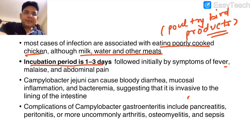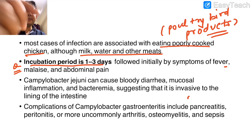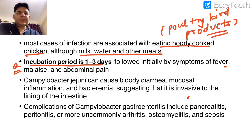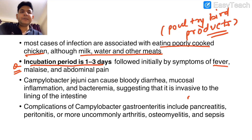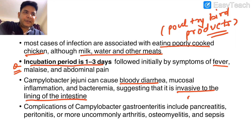The incubation period of Campylobacter jejuni is 1 to 3 days. Mnemonic: C is the third alphabet, so 1 to 3 days is the incubation period of Campylobacter jejuni. Remember also that fever, malaise, and abdominal pain are present, along with bloody diarrhea due to invasiveness of the intestinal lining.